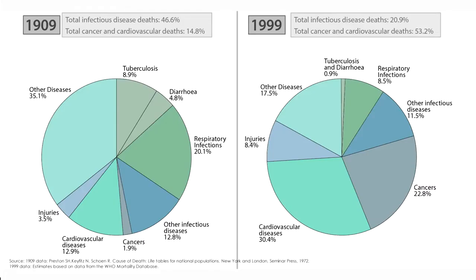This gives you an example of how infectious diseases have changed historically. In 1909, the percentage of infections in Chile causing mortality and morbidity was about 50%. Fast forward to 1999, those figures are now down to about 22 to 23%. So in 90 years, we have seen a dramatic reduction in the importance of infections as causes of mortality and morbidity.